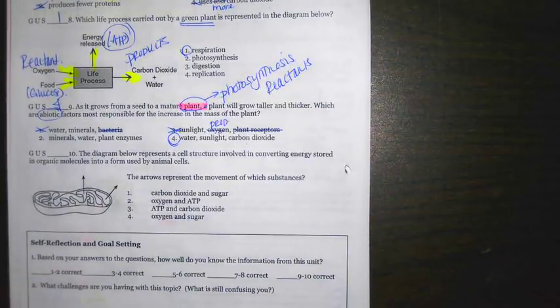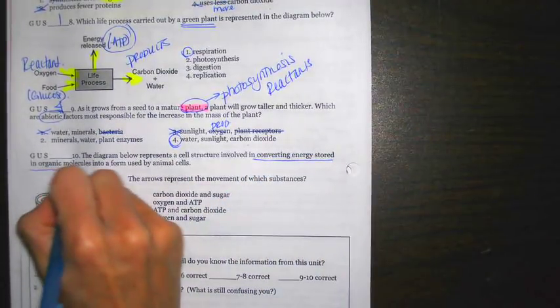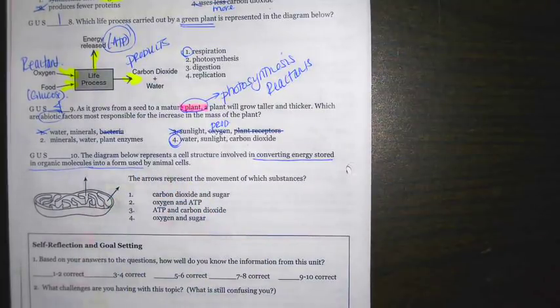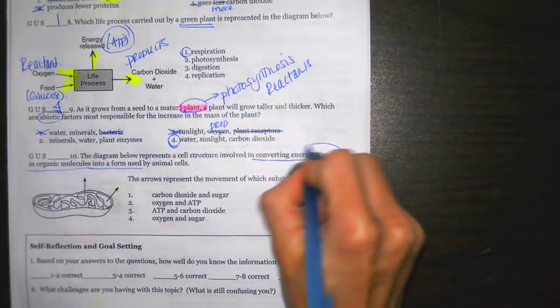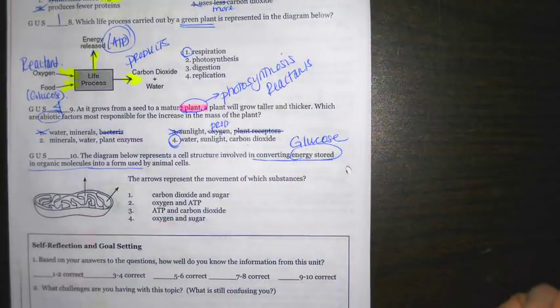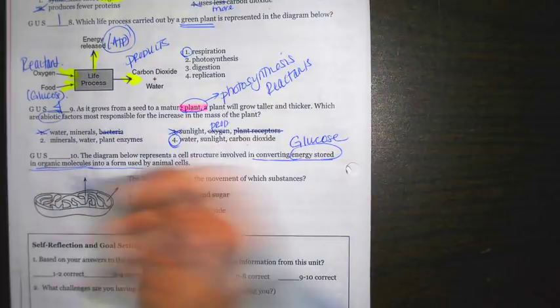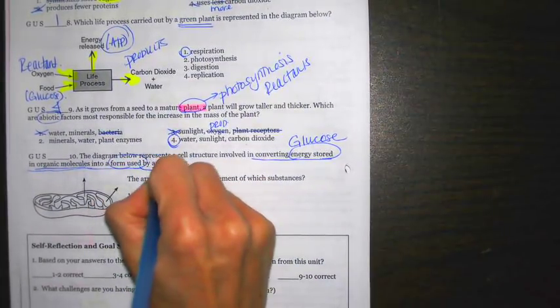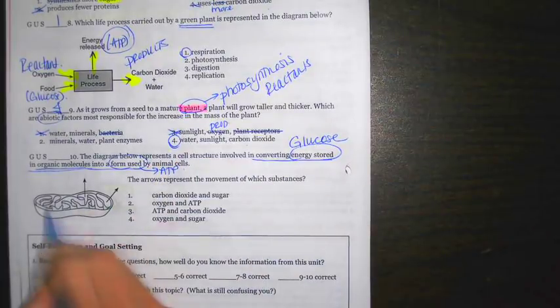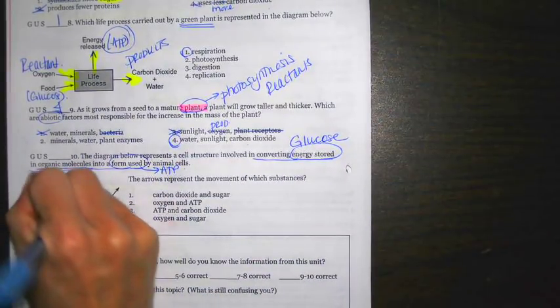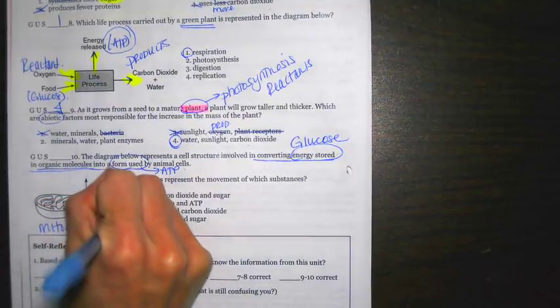Last one, the diagram below represents a cell structure in converting energy stored in organic molecules into a form that can be used by cells. That's kind of a mouthful. Remember, energy is stored inside of glucose, the chemical bonds. Then, again, here it says organic, glucose organic. Here it says a usable form. That usable form of energy is going to be ATP. Cell structure, they don't tell you to label it. Probably a good idea, though, to help you analyze it. We have mitochondria. Remember, mitochondria has little zigzag lines in it.